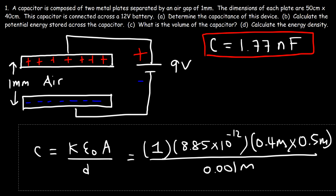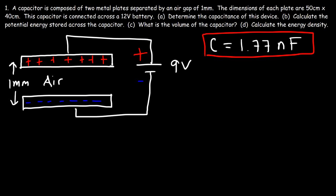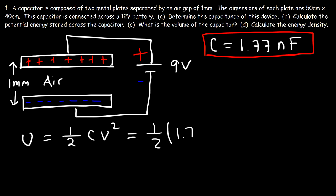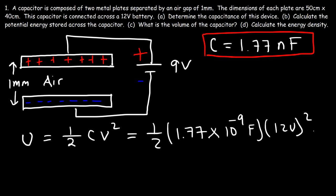Now let's move on to part B: calculate the potential energy stored across the capacitor. The potential energy is one-half C times V squared. The capacitance C is 1.77 nanofarads, or 1.77 times 10 to the negative 9 farads, and the voltage is 12 volts. Plugging those numbers in, the electric potential energy stored in this capacitor is 1.2744 times 10 to the negative 7 joules. That's the answer for part B.